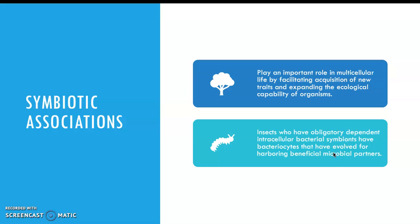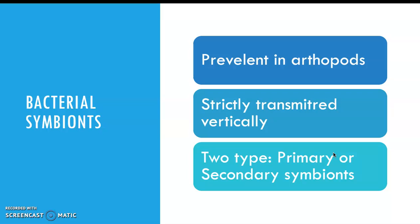Insects that have obligate dependent intracellular bacterial symbionts have, over time, been able to modify their lipid cells and turn them into what is called a bacteriocyte, and that is where the microbial symbiont is housed within the insect. Bacterial symbiont is prevalent in arthropods and is strictly transmitted vertically, meaning it gets transmitted from the mother to the offspring.